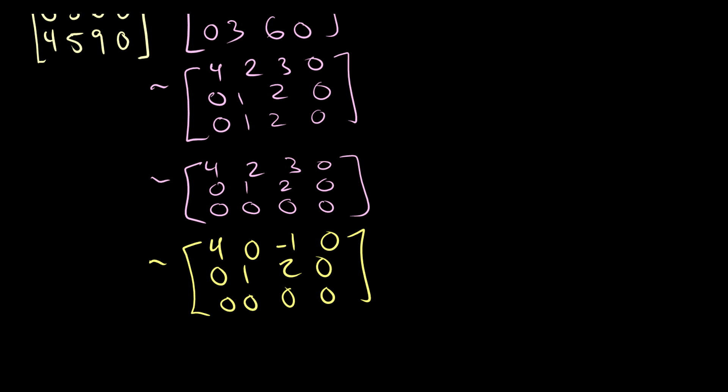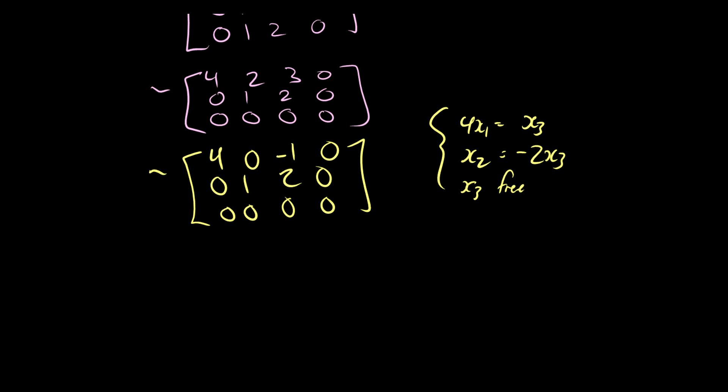And now we should be good to take a look at parametric form. So in this case, we have 4x1 is equal to x3 and x2 is equal to negative 2x3. And of course we have x3 is free. So before we had a solution set that looked like that. Well, we can do a little bit better. So let's rewrite this: 4x1 is equal to x3 and we can write x1 is equal to 1/4 x3. That's better.